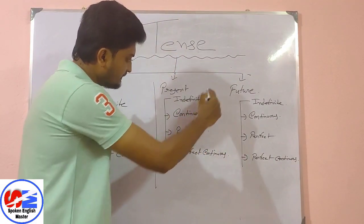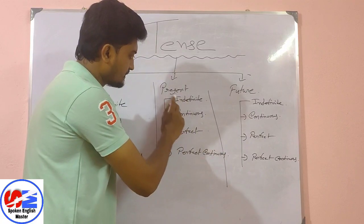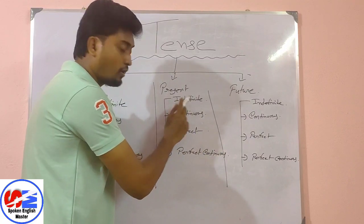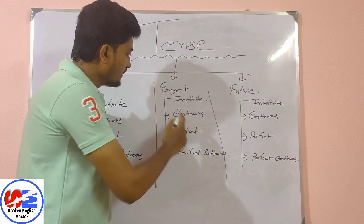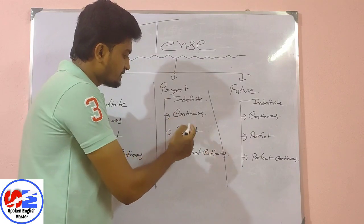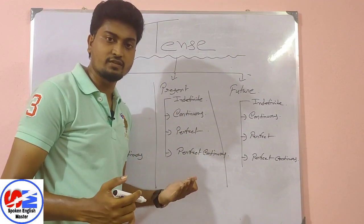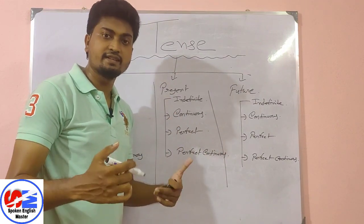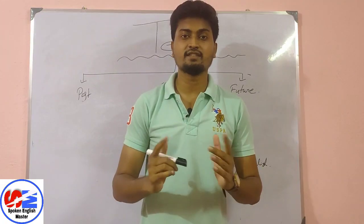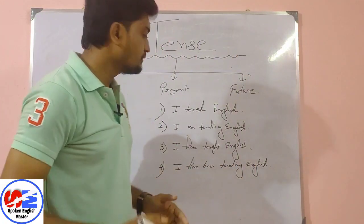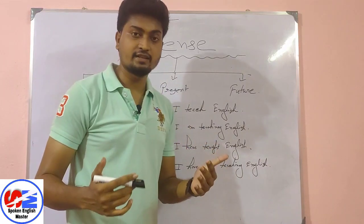Today we will focus on examples of present tense — its four parts: present simple (or present indefinite) tense, present continuous tense, present perfect tense, and present perfect continuous tense. I have written four examples for you, one for each part.